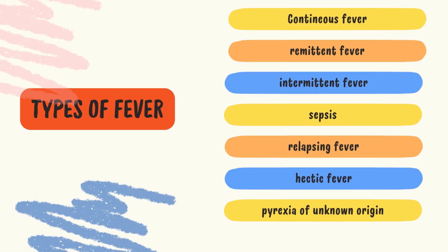Now let's move to the next topic: the types of fever. They are continuous fever, remittent fever, intermittent fever, sepsis, relapsing fever, hectic fever, and pyrexia of unknown origin.